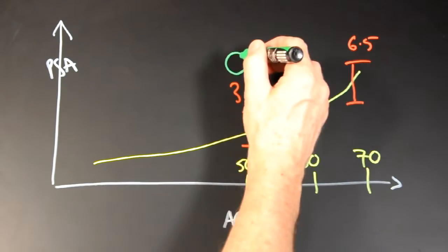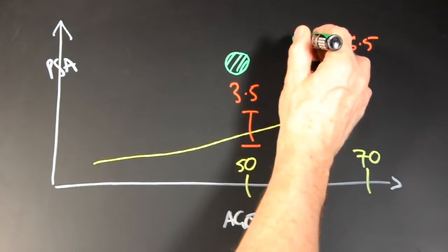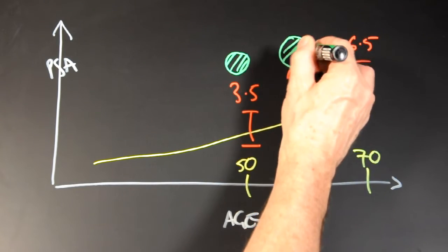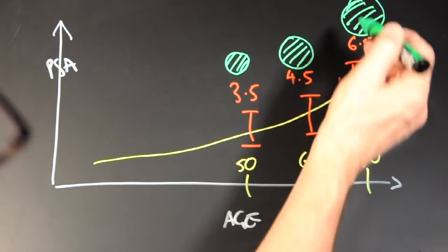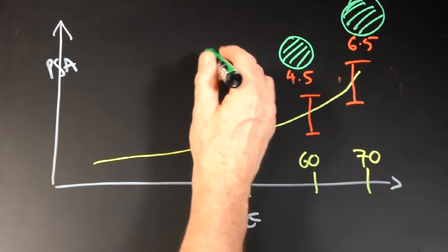In most men, the reason that the PSA increases as we get older is because the prostate increases in size. The bigger the prostate, the more PSA it releases into the blood.